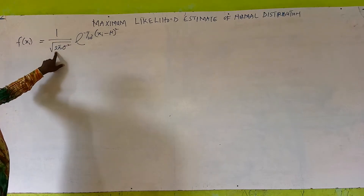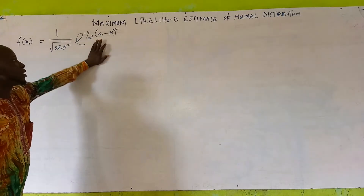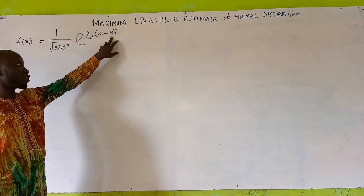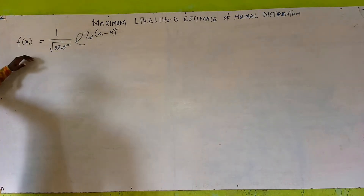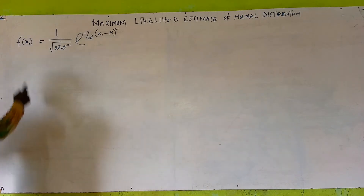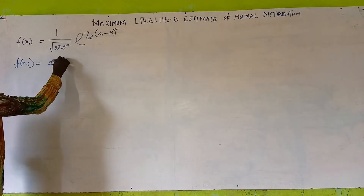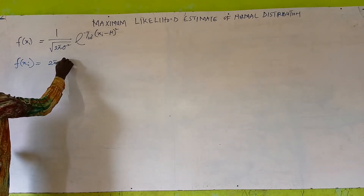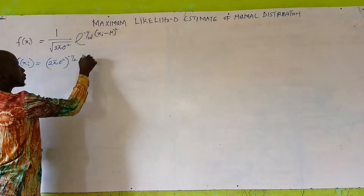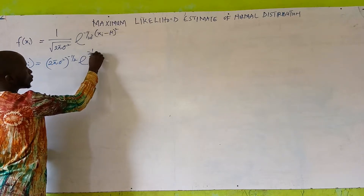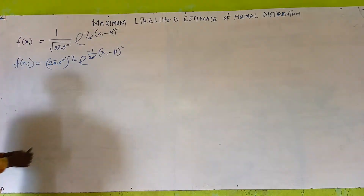The normal PDF is: 1 divided by the square root of 2 pi sigma squared, multiplied by the exponential of minus 1 over 2 sigma squared, into the bracket (x_i minus mu) squared. This can also be written as f(x_i) equals (2 pi sigma squared) raised to the power minus 1 over 2, times exponential of minus 1 over 2 sigma squared times (x_i minus mu) raised to the power 2.